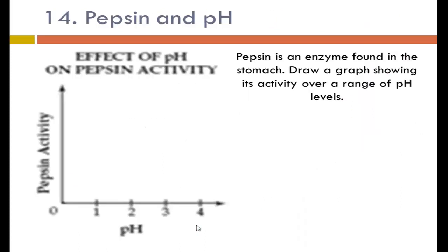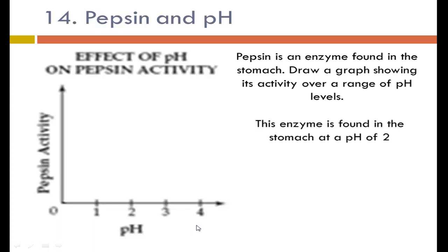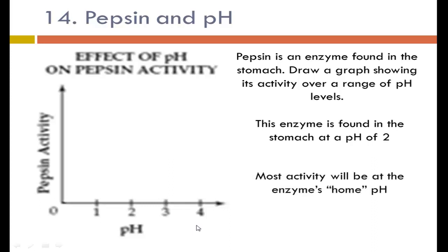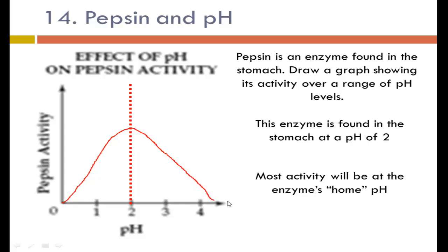Pepsin is an enzyme found in the stomach. Draw a graph showing its activity over a range of pH levels. The stomach is acidic at a pH of about 2. Most enzyme activity will occur at the enzyme's home pH, which is pH 2. Because this enzyme is found in an acidic environment, it works best in an acidic environment, showing the highest activity at pH 2.